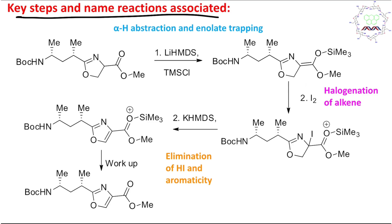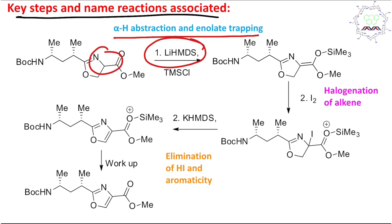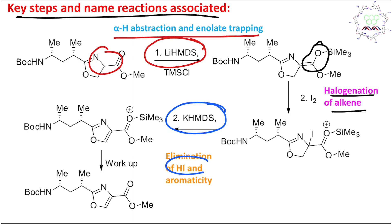The key steps are: first, alpha-hydrogen abstraction and enolate trapping using the strong bulky base lithium HMDS with TMS-Cl — note this base is extremely reactive and pyrophoric; second, halogenation (specifically iodination) of the activated alkene to get a C-I bond; third, KHMDS eliminates H-I (hydrogen from one position, iodine from another) to produce the oxazole, with aromaticity as the driving force.